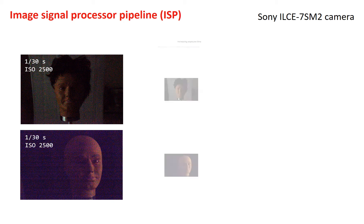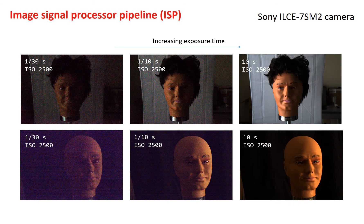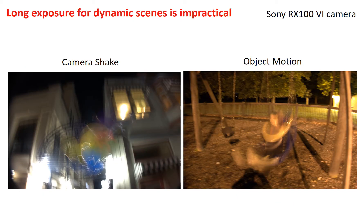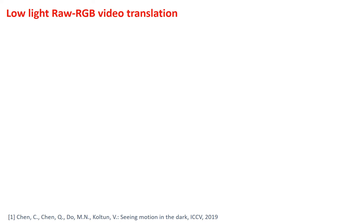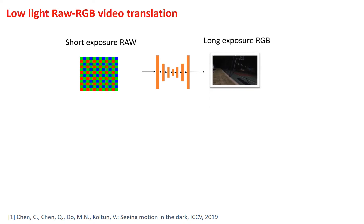Increasing exposure time might be a way to address these problems and better capture the actual scene information. However, long exposure is impractical for dynamic video scenes as it can introduce blur due to camera shake or object motion. Recent models have shown promising results by utilizing deep networks to model the ISP and map short exposure raw from the camera sensor to a target long exposure RGB image.